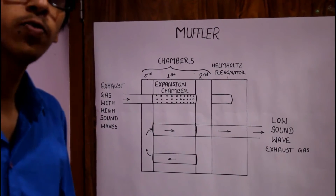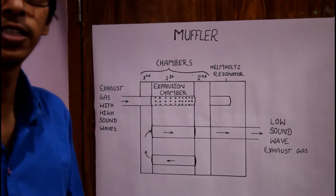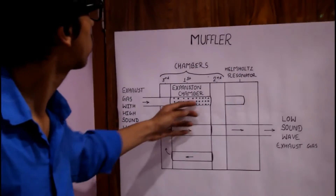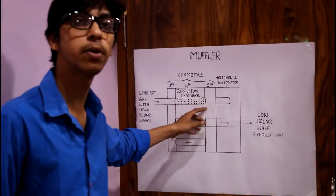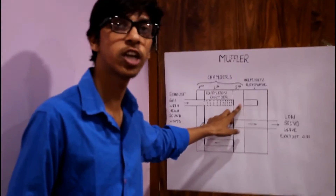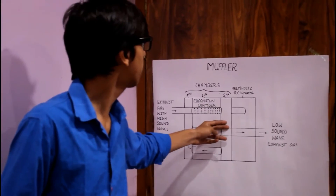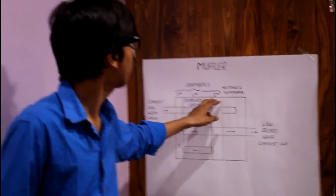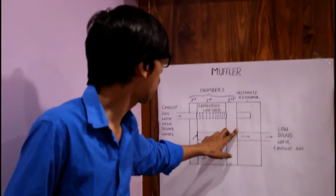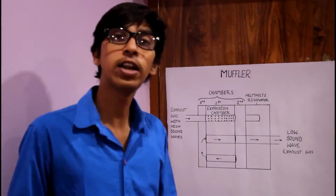Some sound waves which are high frequencies go to the second chamber from the expansion chamber, and in the second chamber they again collide with the walls and reduce the sound waves.